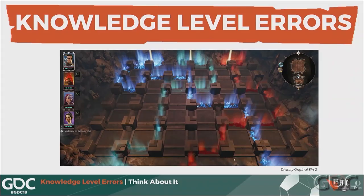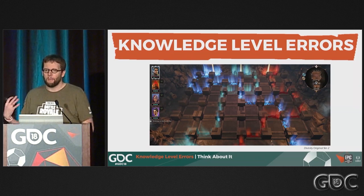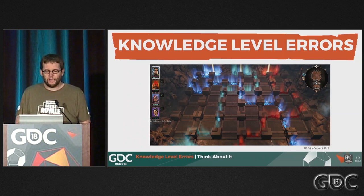Moving on to knowledge level errors. Knowledge level is the higher level of operation — what we typically think of as thinking. Errors at this level are often referred to as cognitive biases. A lot of game developers like to think things through and optimize, and they feel players also encounter things this way — and it can be the case. But more often some players will optimize your system, and other players will learn from them. Most of the time players are just trying to get by rather than optimize.